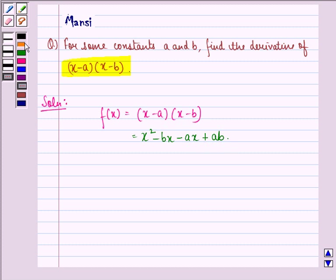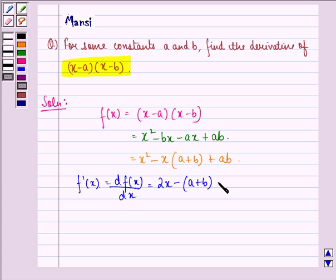And this can be written further as x² - x(a + b) + ab. Now we can find out f'(x), that is df(x)/dx, that will be equal to 2x - (a + b)·1 + 0.